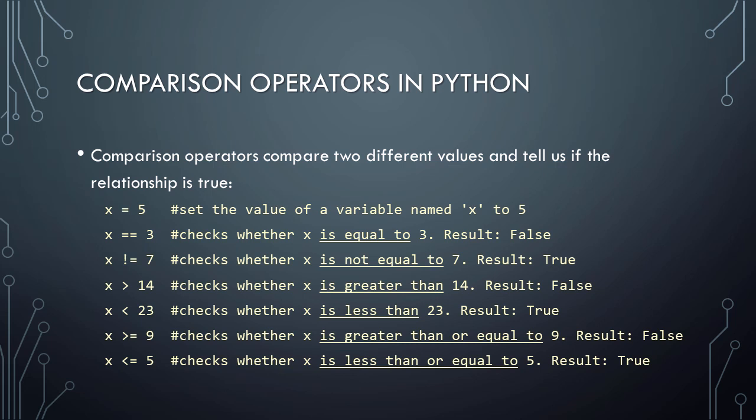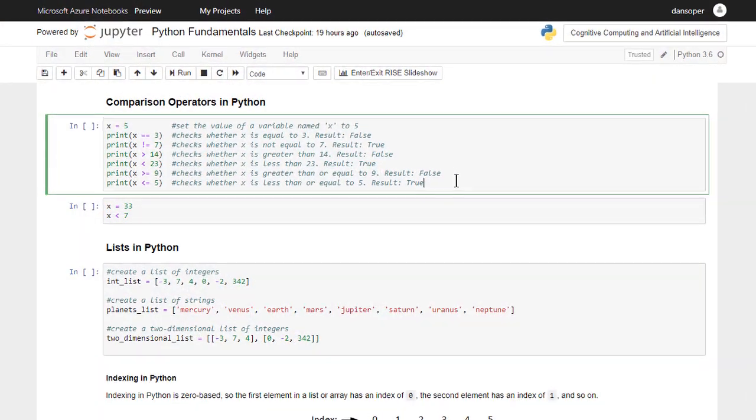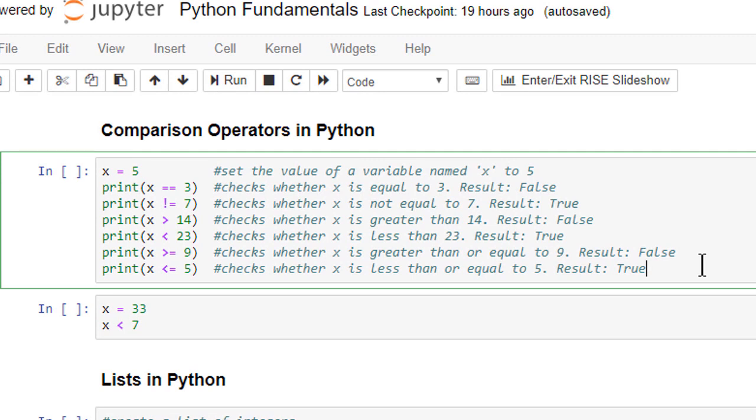Let's see a demonstration of all of these comparison operators. In this first code cell, we see all of the comparison tests that we just discussed. Since we know that the variable x is equal to 5, we know that the results should be false, true, false, true, false, true. Let's run the code cell to verify that Python performs all of these comparisons correctly.